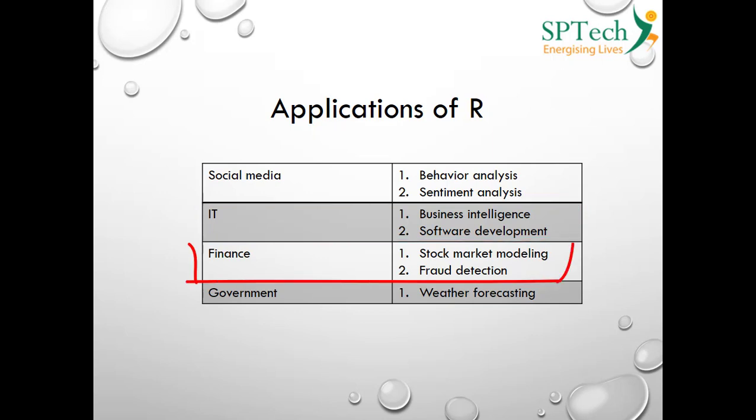R is also used for software development — small applications can be built using R. In finance, R is used for stock market modeling, such as time series analysis to predict share prices over the next two to three years or months based on previous prices. R can also be used for fraud detection, which is another important application in finance.